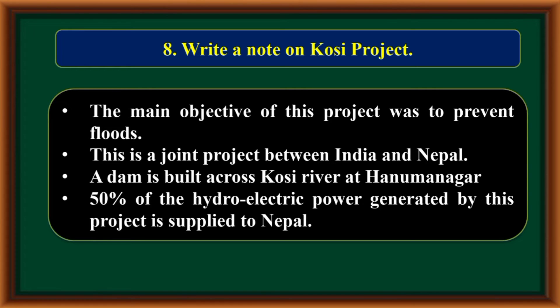Write a note on Kosi Project. The main objective of this project was to prevent floods. This is a joint project between India and Nepal. A dam is built across the Kosi River at Hanumanagar. 50% of the hydroelectric power generated by this project is supplied to Nepal.